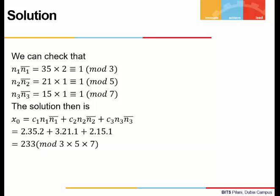This gives us 233, and this would be modulus capital M. For us, capital M is the product of all three moduli: 3, 5, and 7. This is 233 mod 105, which is congruent to 23 mod 105. We can see that 23, if substituted, satisfies all three congruences. So we will get a general solution: x = 23 + 105t.